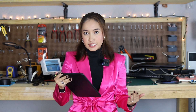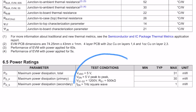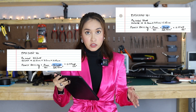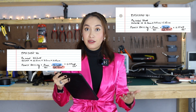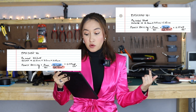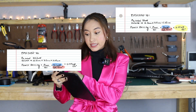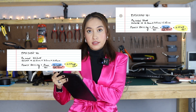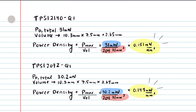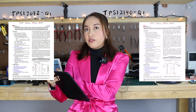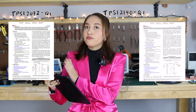Now let's do power density calculations for two similar devices and compare their functionality. First, let's pull maximum power from the datasheet on both. It's important to keep in mind that this Pmax is straight from the datasheet and related to specific test conditions. Then let's pull the volume from the datasheet. Finally, we have the power density calculation. For the TPSI2140, we have 0.151, and for the TPSI2072, we have 0.148. Both have very similar power density — the TPSI2140 is one channel at 1200 volts, 50 milliamps, and the TPSI2072 is two channel at 600 volts, 50 milliamps.